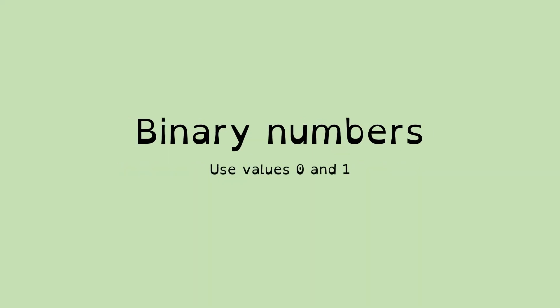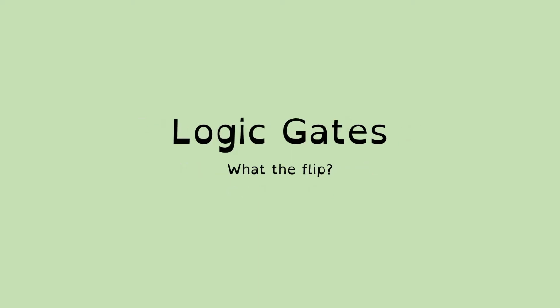Binary numbers use values 0 and 1. And in fact, they tend to use several of these values together, combined to give you usually integers. So that's an 8-bit binary number there.